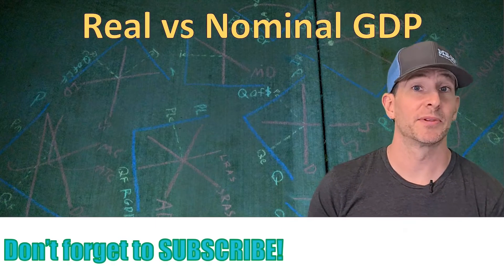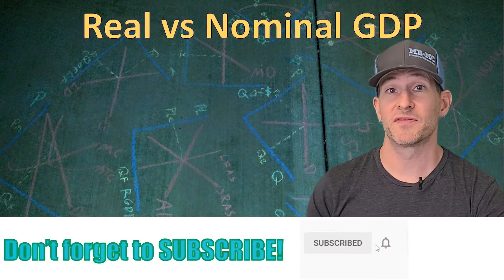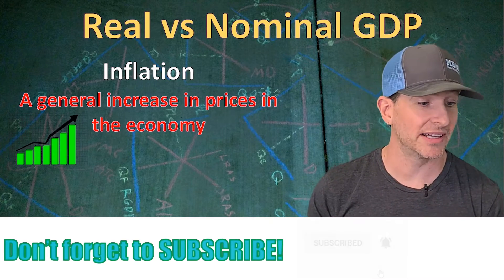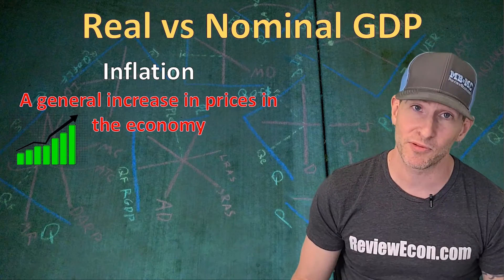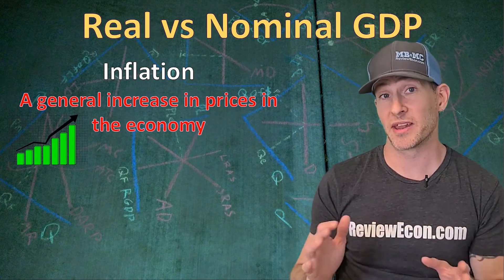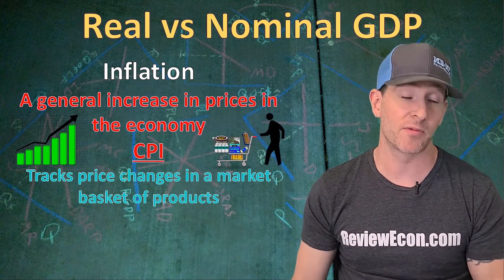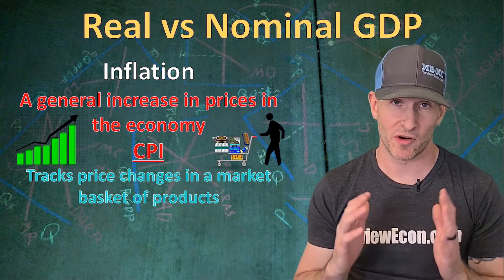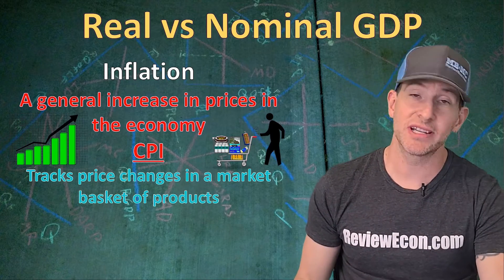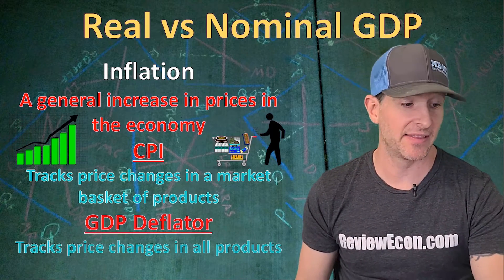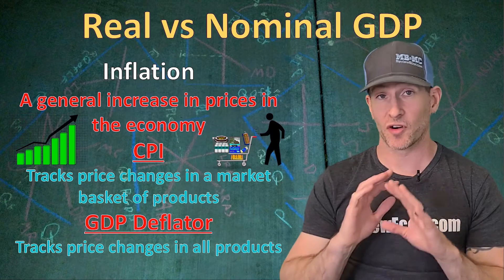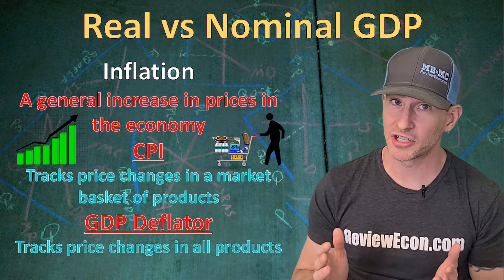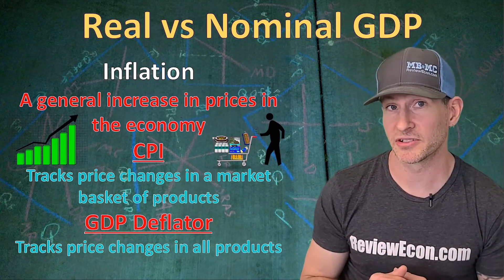First, we're going to talk about a couple of definitions that you need to know. If you watched the video about the Consumer Price Index, you know that inflation is a general increase in the prices of goods and services within an economy. We usually measure that with the CPI, which tracks average price changes for a market basket of goods. The GDP deflator is a little bit different in that it tracks the price changes for all goods and services within an entire economy.